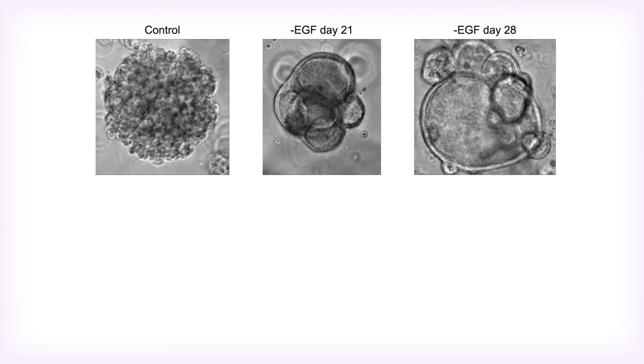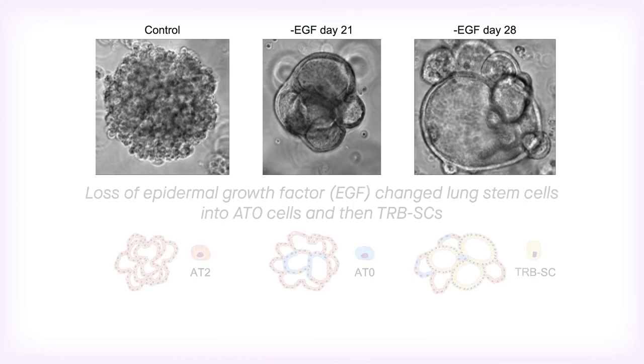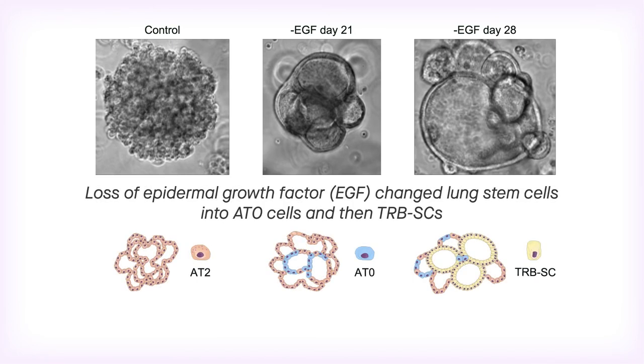To validate their computational predictions, the team used their recently developed mini-lung model, a common type of model known as an organoid. Using organoids, the team found that removal of a key growth factor called epidermal growth factor changed lung stem cells into AT0 cells and, later, TRBSCs.